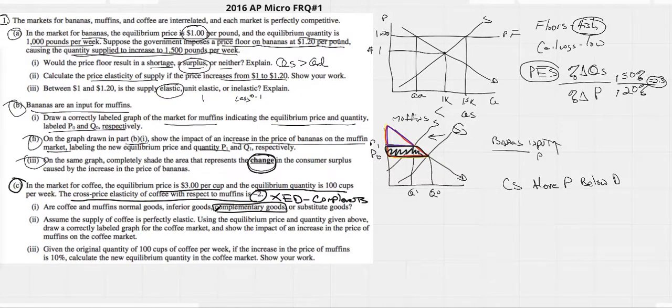Remember, you could have slotted out normal and inferior immediately, because those have to do with YED, income. Income goes up, you consume more normal goods and less inferior goods. XED is complements and substitutes. All right, assume the supply of coffee is perfectly elastic.